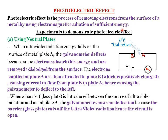Our first experiment involves using neutral plates. The second experiment will involve using a charged electroscope. We have neutral plates A and B — initially the plates have no charge. We have a galvanometer to show us the presence of current or flow of electrons, ultraviolet radiation to emit or eject electrons, and a battery with positive and negative terminals. Because plate A is connected to the negative terminal of the battery, it becomes negatively charged, and plate B, connected to the positive terminal, becomes positively charged.